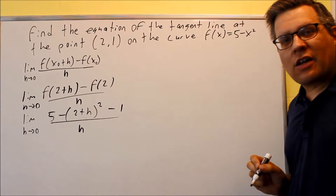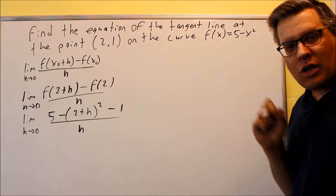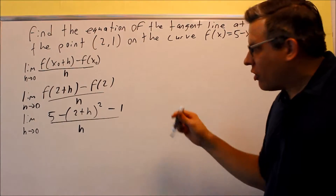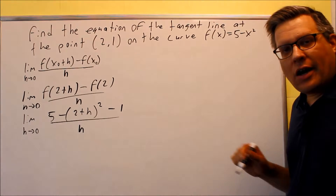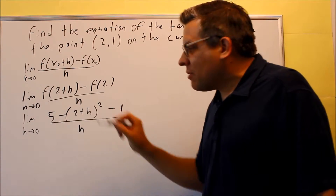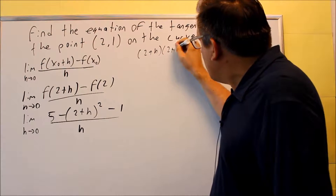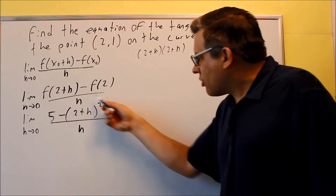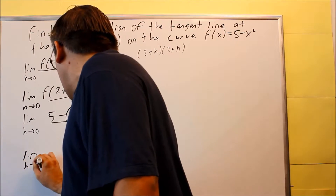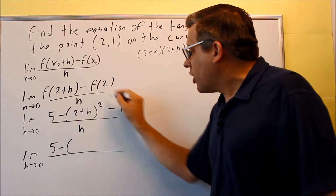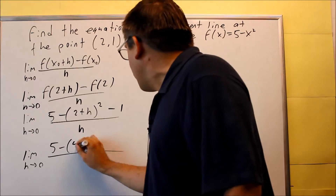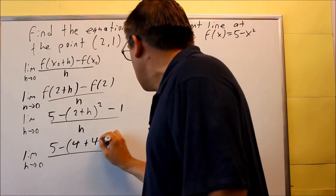Now this part on top we need to expand as far as possible so we can see what cancels. Remember that (2 plus h) squared means (2 plus h) times (2 plus h) — don't take the shortcut and square both terms inside, because you'll be missing the middle term. You have to FOIL it out. So we have 5 minus, keeping everything inside parentheses to apply the minus sign, which gives us 4 plus 4h plus h squared.